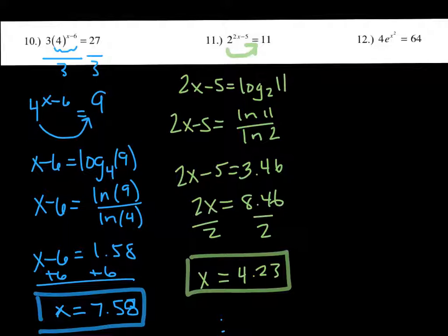And then number 12. Same thing, e is the part being raised to the power, so that's the part we want to undo. But first, we have to divide both sides by 4. So that will give us then e to the power of x squared equals 64 divided by 4, which is 16.